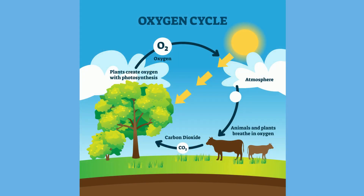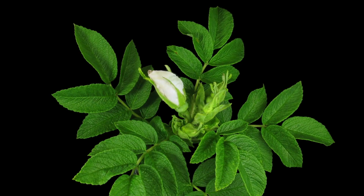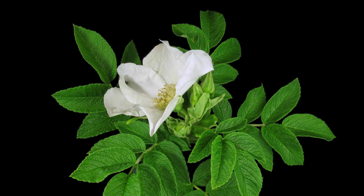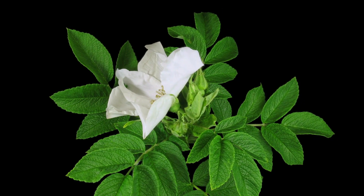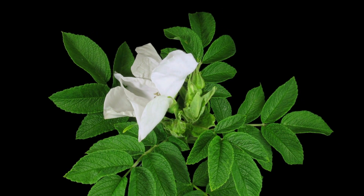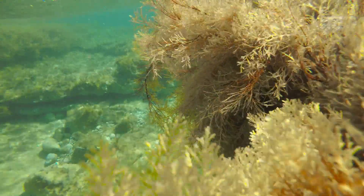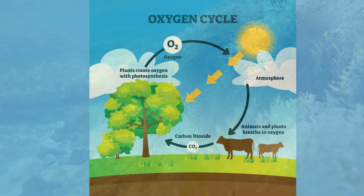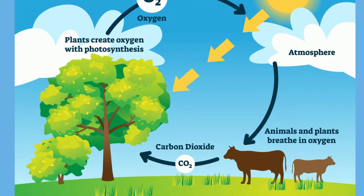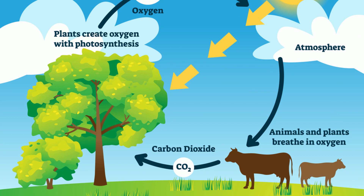Oxygen moves from the atmosphere to the lithosphere and the biosphere. Let's see how oxygen is cycled among these different regions on Earth. Plants, along with phytoplankton and other organisms that carry out photosynthesis, release oxygen into the atmosphere. In fact, marine plants produce most of the oxygen in our atmosphere. Animals, some bacteria and protists, and other organisms that carry out cellular respiration use oxygen in order to create ATP and they release CO2.